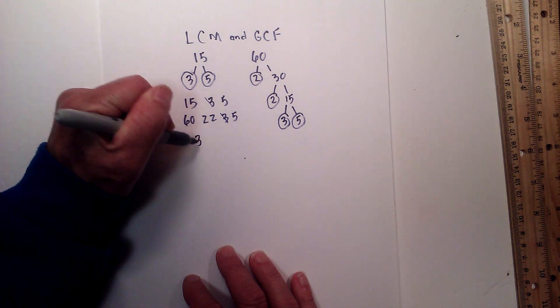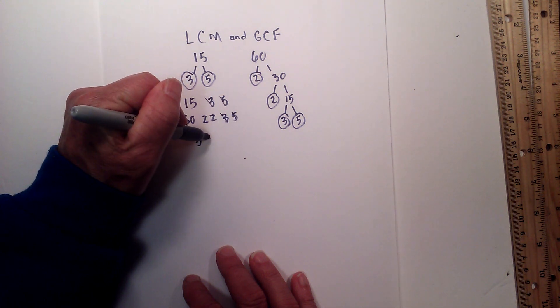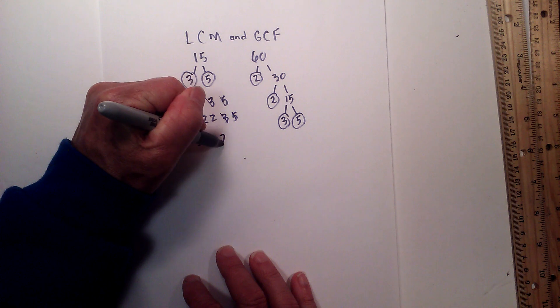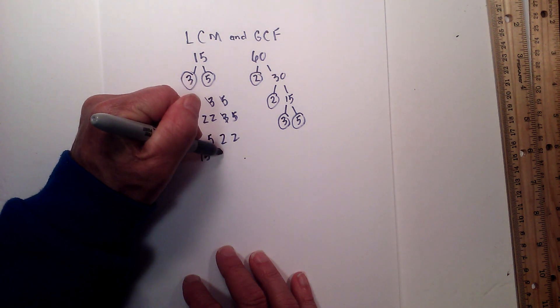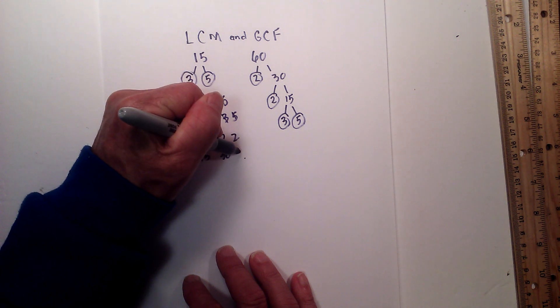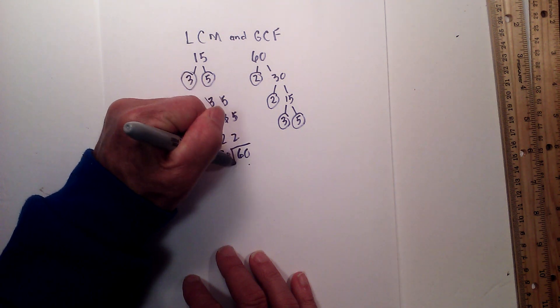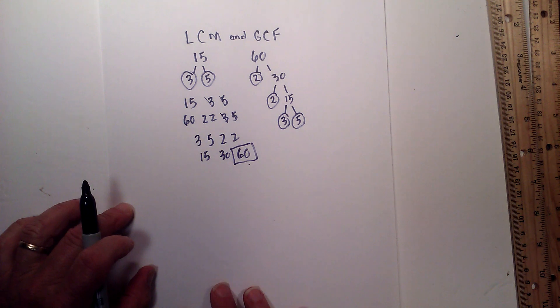3 times 5 is 15, 15 times 2 is 30, 30 times 2 is 60. So the LCM of 15 and 60 is 60.